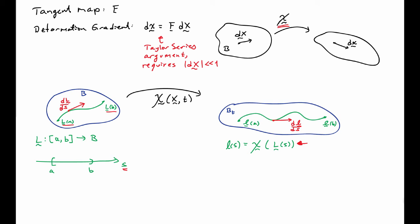When I take the derivative on the right-hand side, I use the chain rule. I have the derivative of chi with respect to its argument, which is the reference positions, then the derivative of L with respect to S. So I get this relationship between the two tangent vectors through the gradient of the deformation map.